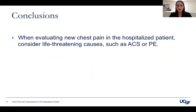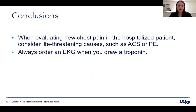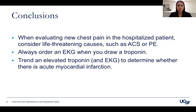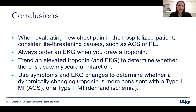In conclusion, when evaluating new chest pain in the hospitalized patient, consider life-threatening causes such as acute coronary syndrome or pulmonary embolism. Always order an EKG when you draw a troponin, and trend the troponin and EKG to determine whether there's an acute MI or just myocardial injury. Use symptoms and EKG changes to determine whether a dynamically changing troponin is consistent with a type 1 MI (acute coronary syndrome) or type 2 MI (demand ischemia), and treat appropriately.